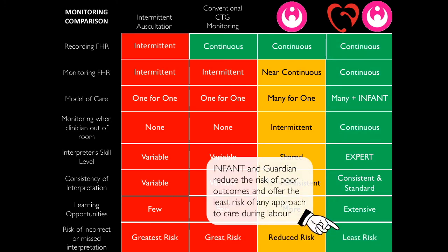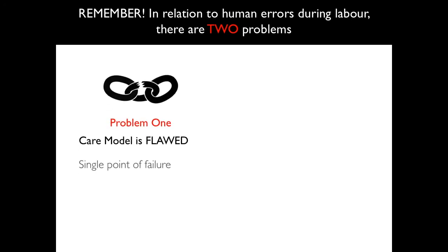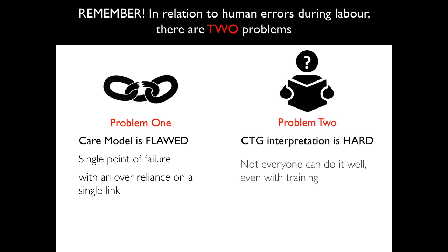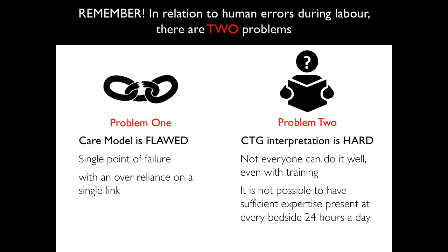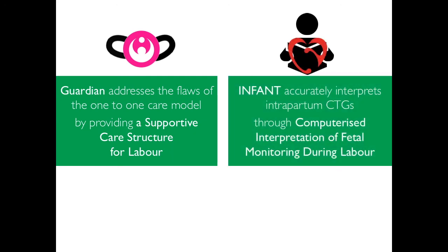INFANT and Guardian reduce the risk of poor outcomes and offer the least risk of any approach to care during labour. Remember that in relation to human errors during labour there are two problems. Problem 1 was that the model of care was fundamentally flawed. Problem 2 was that CTG interpretation is hard. Guardian is the technology developed to address problem 1 — the flaws of the one-for-one care model. INFANT was developed in response to problem 2: computerised interpretation of fetal monitoring during labour.